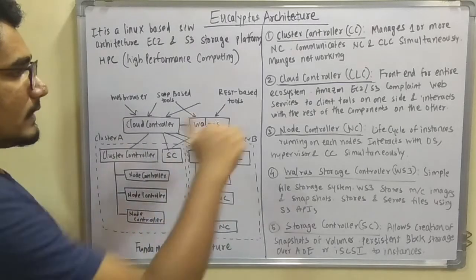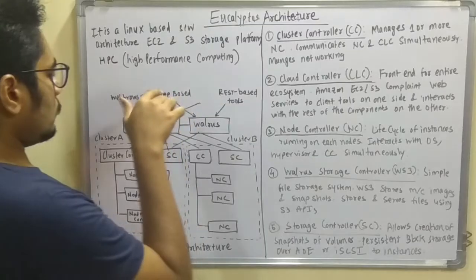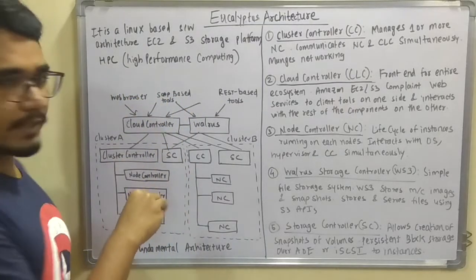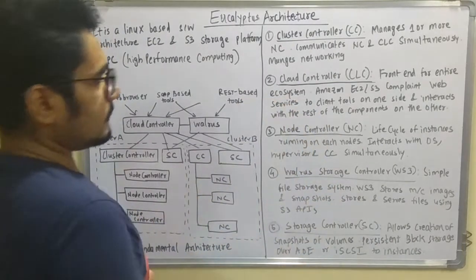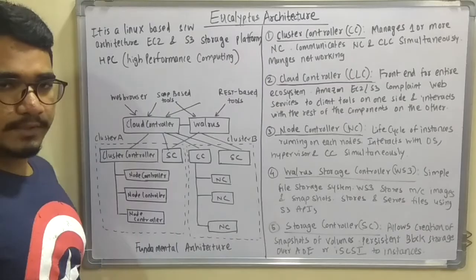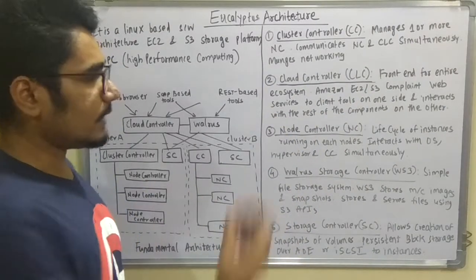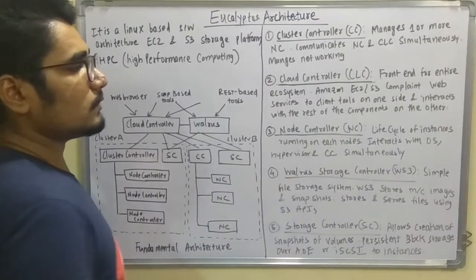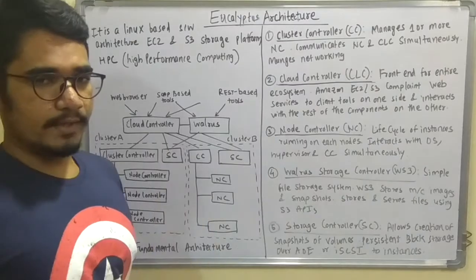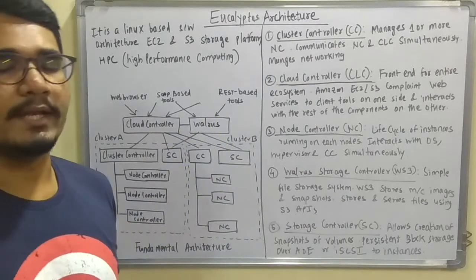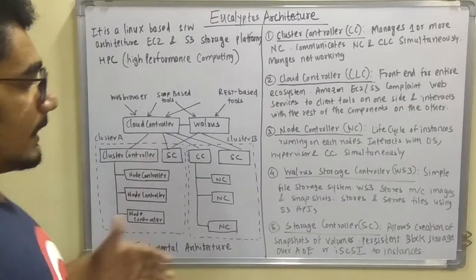Next, the Cloud Controller (CLC) — note that the Cluster Controller is CC and the Cloud Controller is CLC, so be careful with abbreviations when drawing the diagram. The CLC is the front end since it receives many hits from different kinds of applications. It is compliant with Amazon EC2 (Elastic Cloud Compute) and S3 (Simple Storage System). It is connected to all web services and client tools on one side, and to the rest of the Eucalyptus components on the other side, providing access to dashboards, elasticity, and storage.